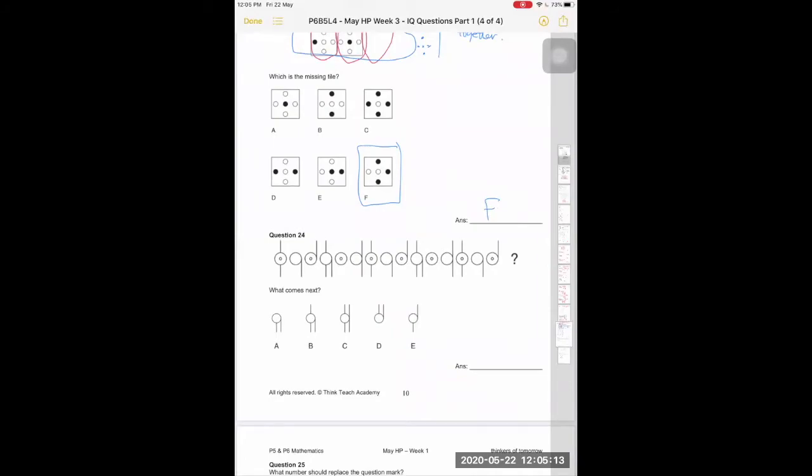You need to identify what makes up one set in question 24. Which part makes up one set, one set, and one set? Just group your shapes into your individual sets. You have to find which is the pattern that comes next for question 24.